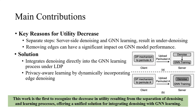What's more, a key challenge that needs to be tackled is that removing edges can have a significant impact on GNN performance. To solve the above concerns, we propose a novel approach that integrates denoising directly into the GNN learning process under local differential privacy. This strategy enhances server-side private learning by dynamically incorporating edge denoising. This work is the first to recognize the decrease in utility resulting from the separation of denoising and learning process, offering a unified solution for integrating denoising with GNN learning.